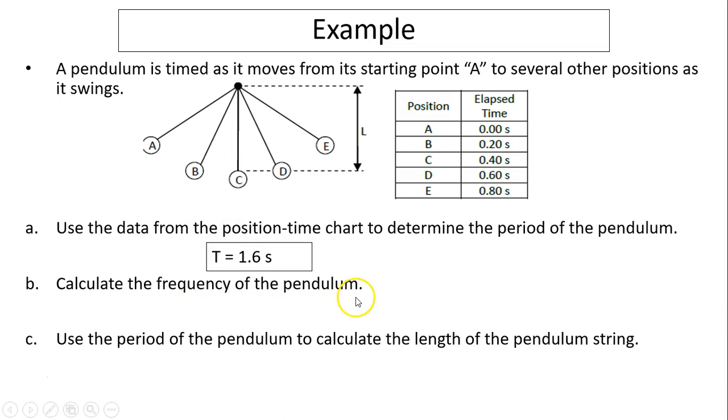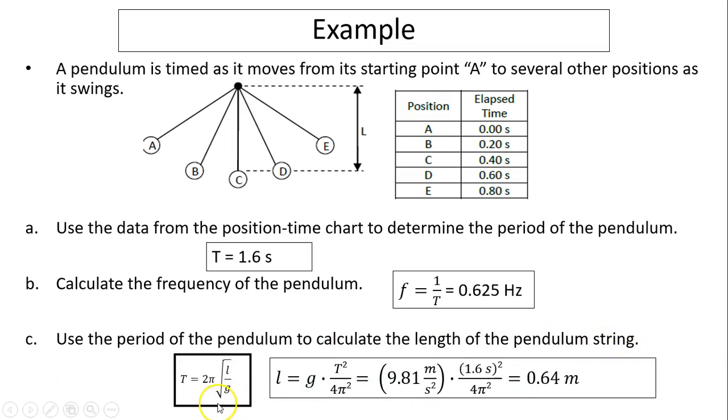Calculate the frequency of the pendulum. The frequency is 1 over period, so it's 0.625 hertz. Use the period of the pendulum to calculate the length of the pendulum string. We use the pendulum equation, same as the last example. So the pendulum string is 0.64 meters.